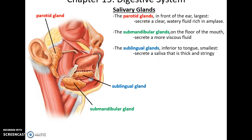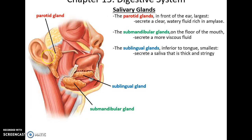The parotid glands are near the ear and produce a very clear fluid with lots of amylase. The submandibular glands are underneath the mandible on the floor of the mouth and secrete a slightly more viscous saliva. The sublingual glands are directly under the tongue, and their saliva is the thickest with a lot of mucus in it.